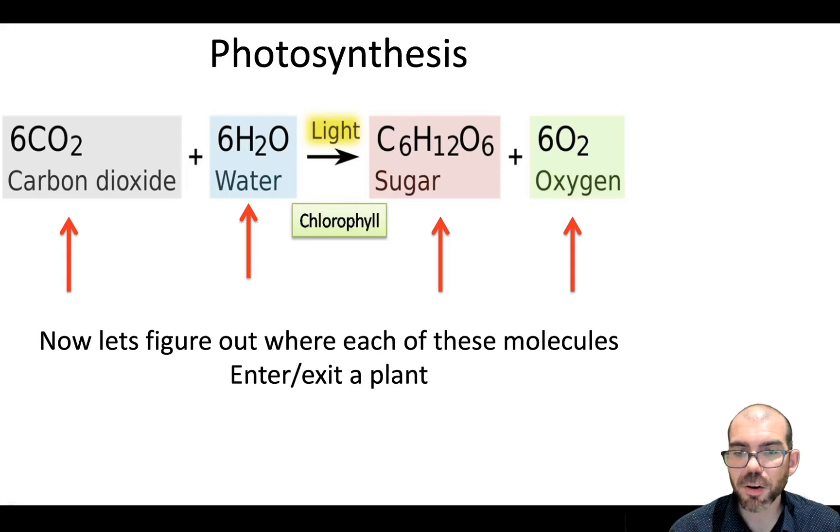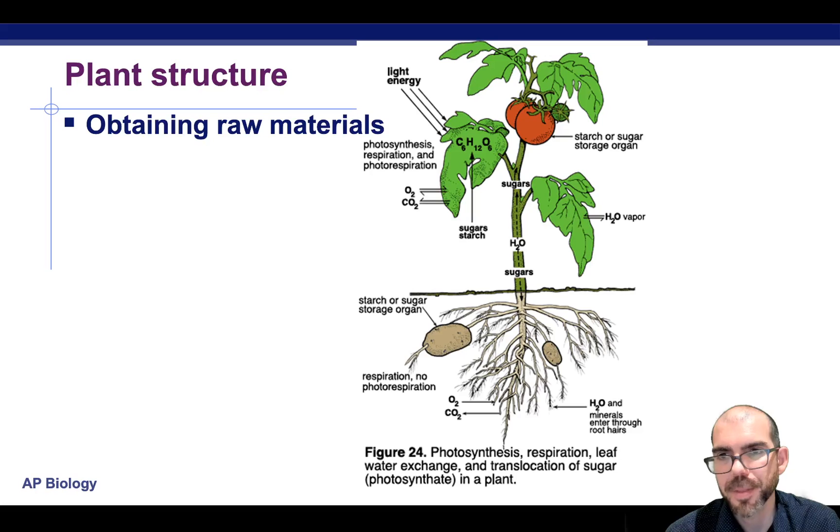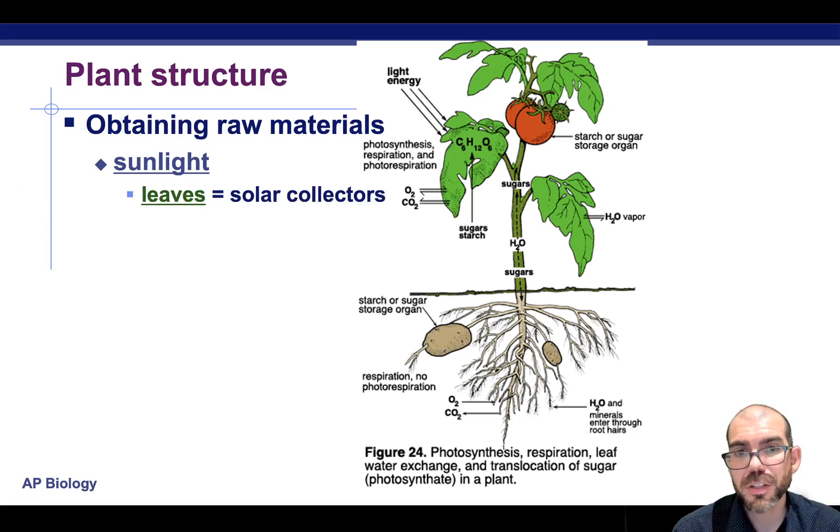So that takes care of light. Let's look at how the reactants and products move across a plant in photosynthesis. It's helpful to know the structure of a plant itself. To obtain the raw materials needed for photosynthesis, a plant, first and foremost, needs sunlight. Sunlight is going to be absorbed on the leaves on a plant. The best analogy I can think of for leaves is a solar panel because in the true meaning of a solar panel, plants are using their leaves to absorb solar energy and convert it into another form.